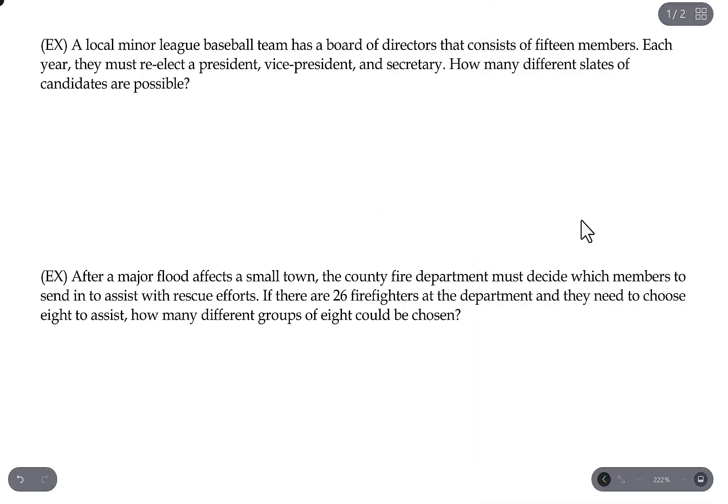Let's look at this next example. A minor league baseball team has a board of directors that consists of 15 members. Each year they must re-elect a president, vice president, and secretary. How many different slates of candidates are possible? So first you need to decide if you're choosing a single item out of multiple groups or if you have multiple items chosen out of a single group. Because in this case we have this board of directors members which has 15 members. That's a single group of items that we're picking from. And from that single group we are picking multiple items.